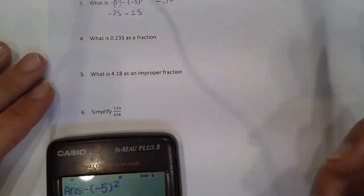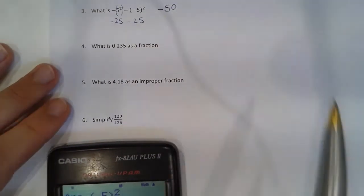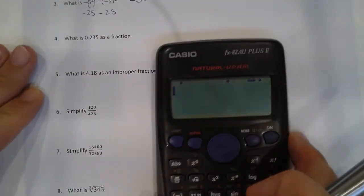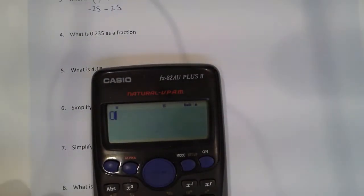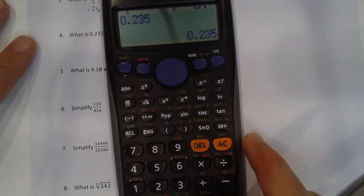Number 4. Again, very common question. What is 0.235 as a fraction? Well, quite an easy one, this one. If you type in 0.235 and then you press equals, it just gives you an answer of 0.235. You press that SD button again.